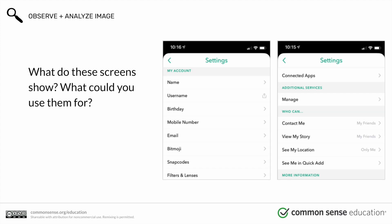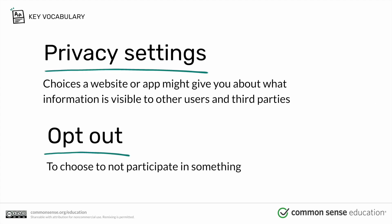What did these screens show and what could you use them for? These are settings screens in different apps. There are going to be defaults — defaults that the company wants set to collect information on you. Going into these privacy settings means you can opt out of different things. So if you don't want others to see your location, this is where you make that happen. Opting out just means choosing not to participate in something.